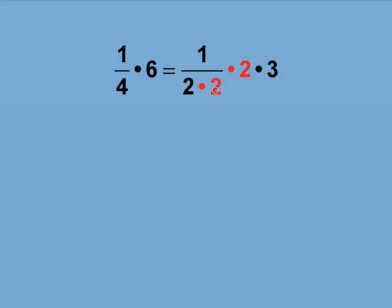The 2's that are highlighted divide out. We are left with 3 over 2, which becomes 1 and a half.